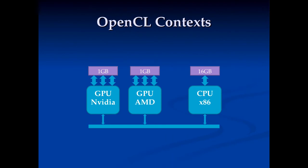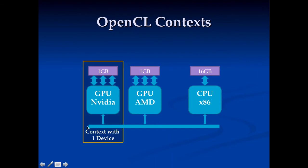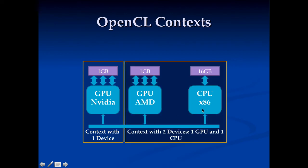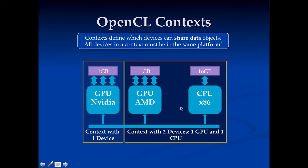Let's look at what an OpenCL context is. A context is a grouping of devices — here we have a context with one device, and here a context with two devices. You create a context in OpenCL because it tells you what can share data. If you want to share a data object back and forth between two devices, it has to be in the same context. All devices in the context need to be in the same platform, and this allows vendors to optimize data movement between devices.